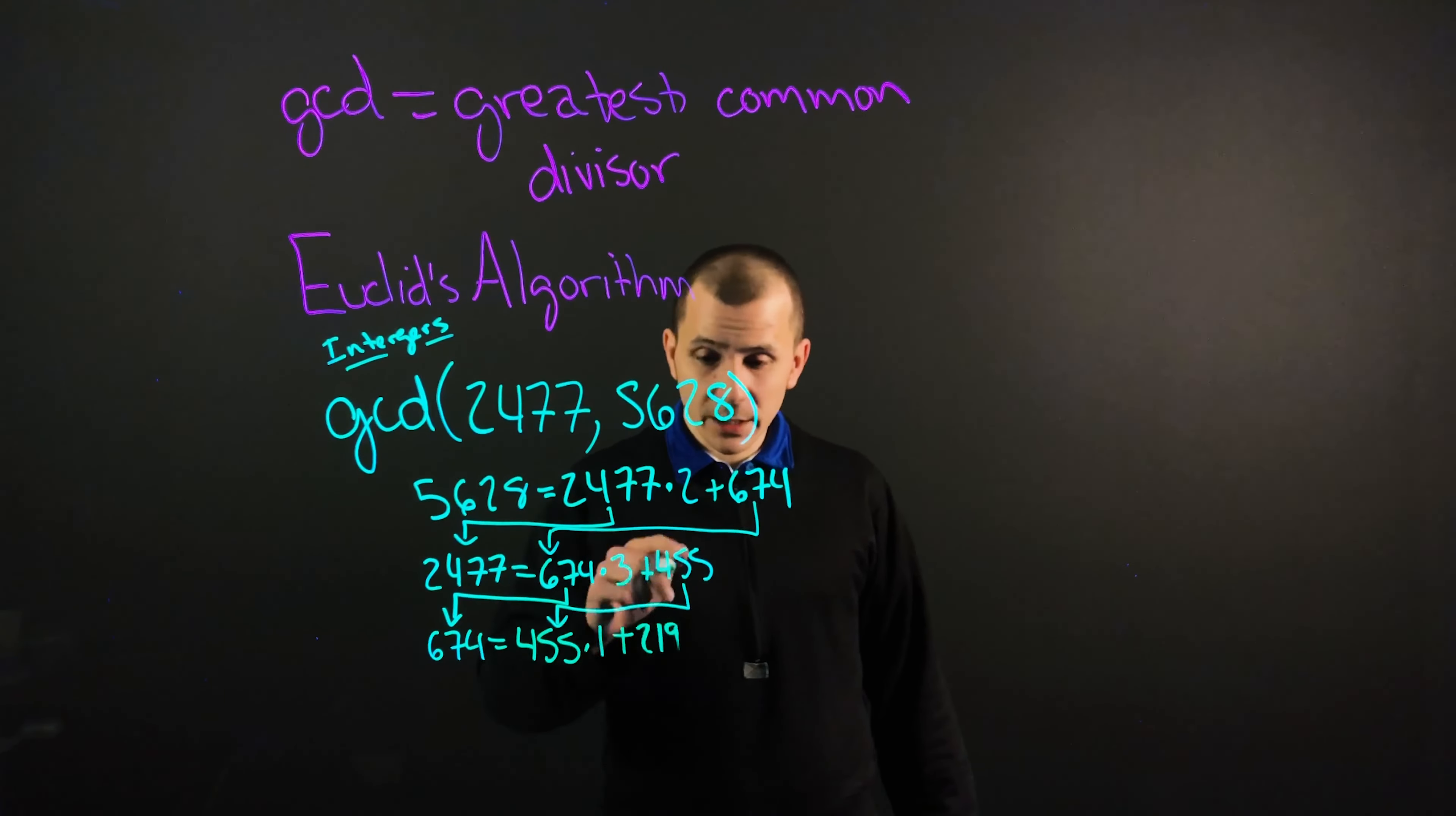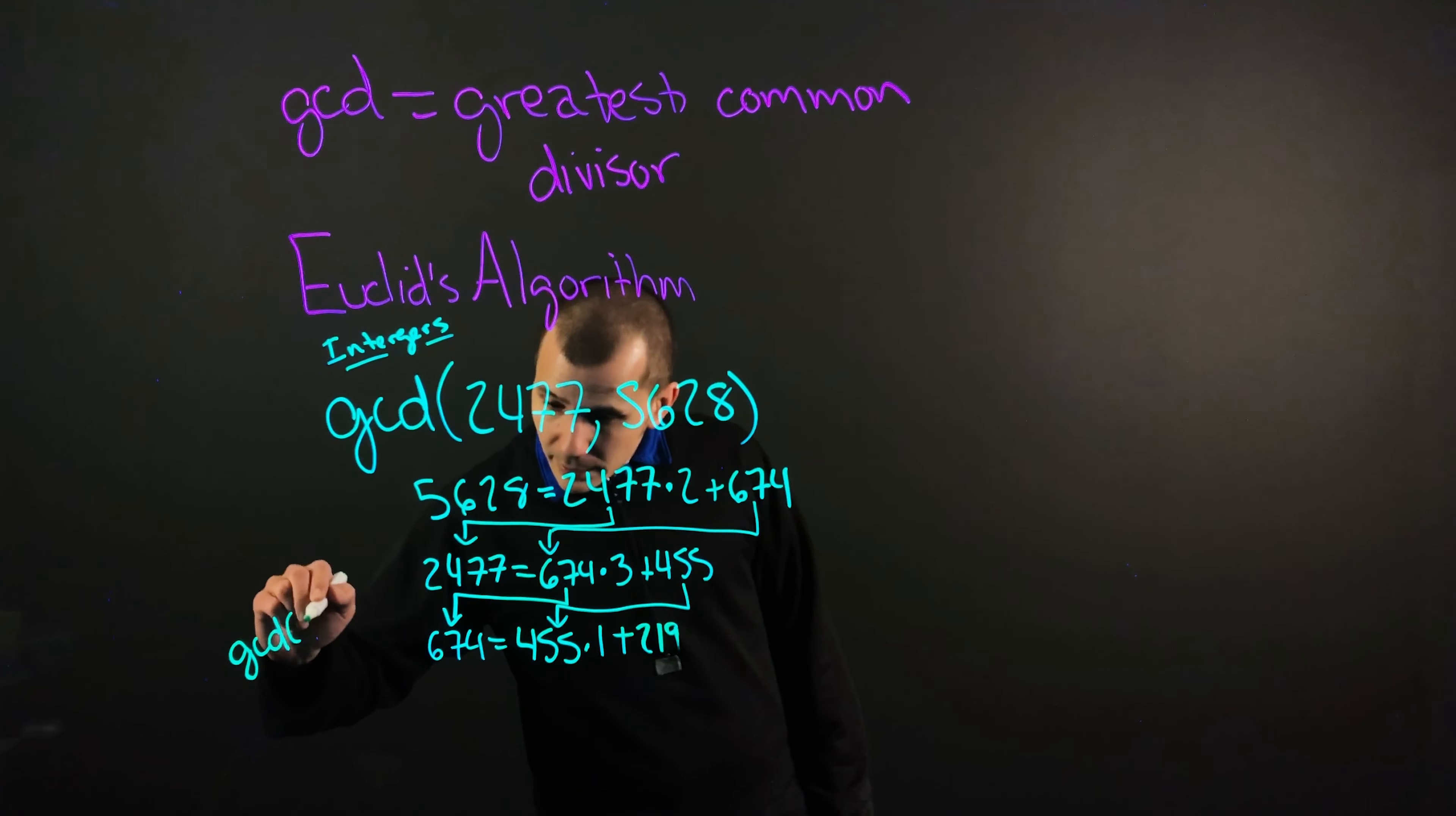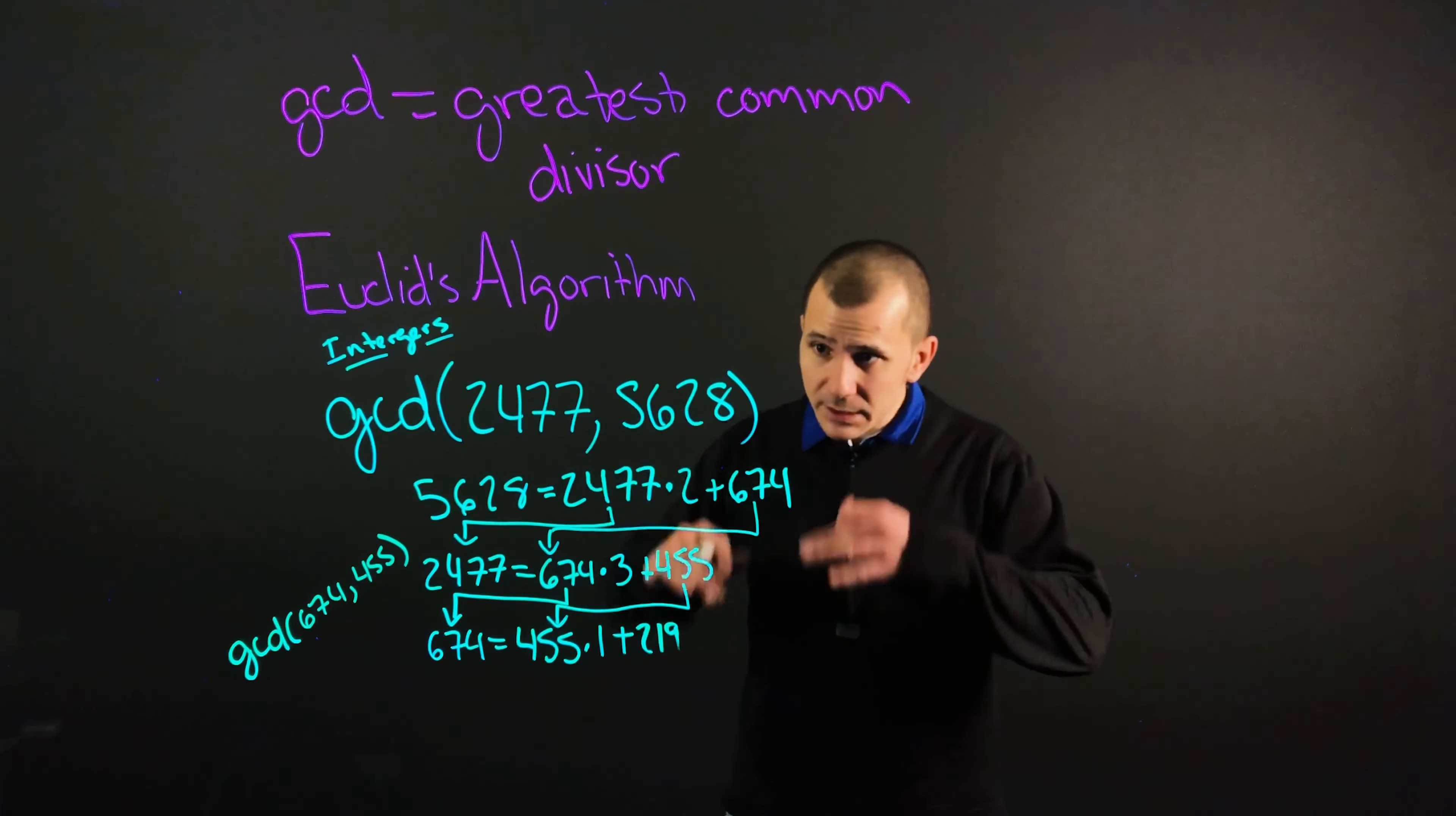Alright, so we're getting down there. We're whittling it down. Now, mind you that this is essentially the same thing as saying that GCD(674, 455)—as a rooted down version here. It's the same thing. We're just getting it down.